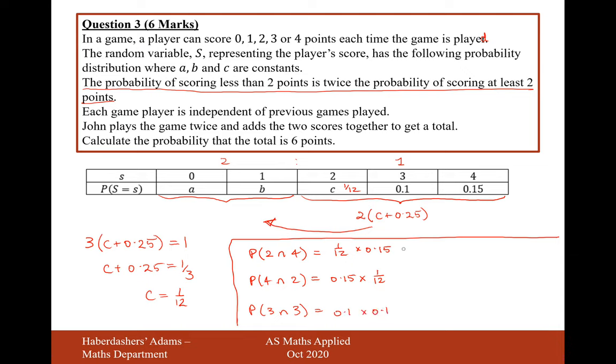So now when we calculate all of these probabilities, let's just do it all in one go and then add them all together. We're going to get 1 over 12 times 0.15 times it by 2, add 0.01. We're going to get 0.035.